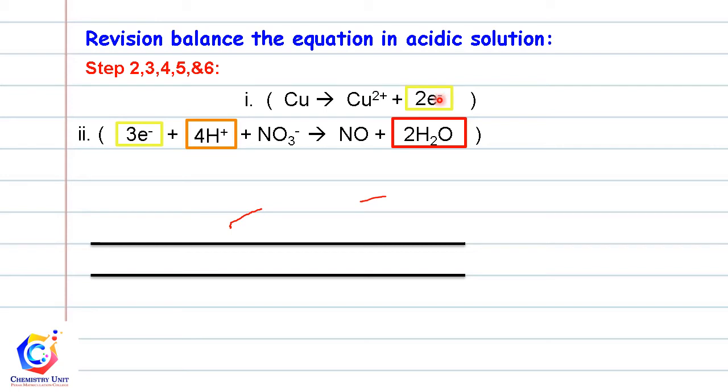Next, we need to ensure that both sides have the same number of electrons. So this whole equation times three and then this whole equation times two. Then we combine both equations after times three and times two.